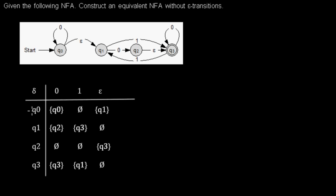The table means if I'm in Q0, with a 0 I can go to Q0. That's the same as this transition.